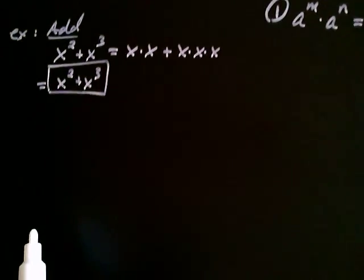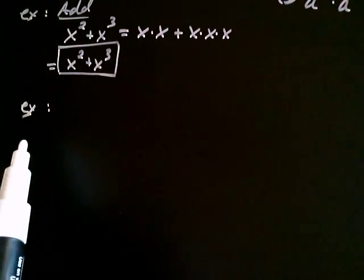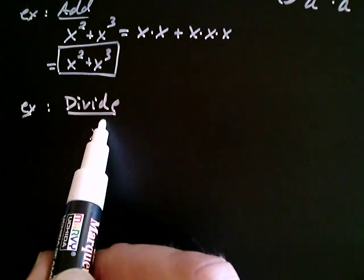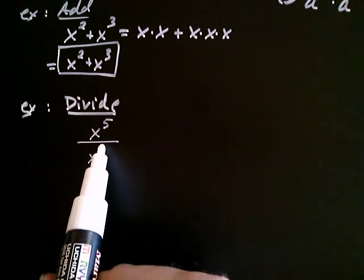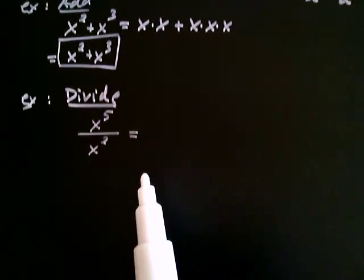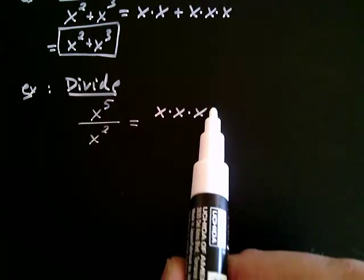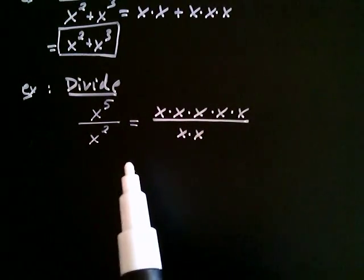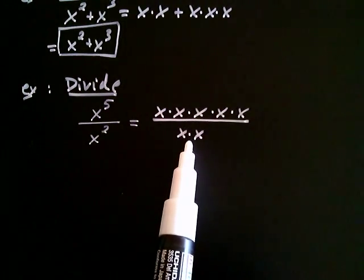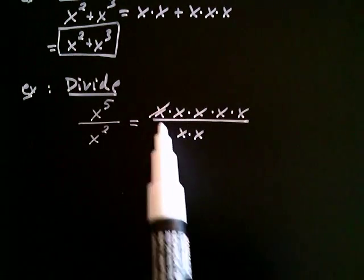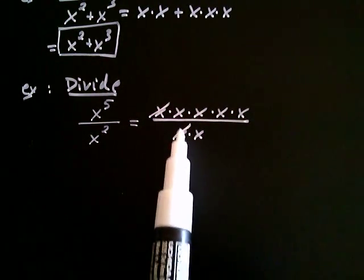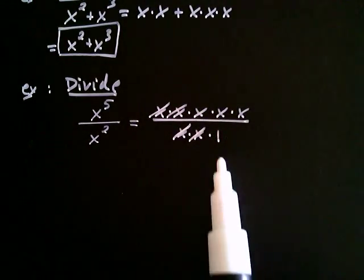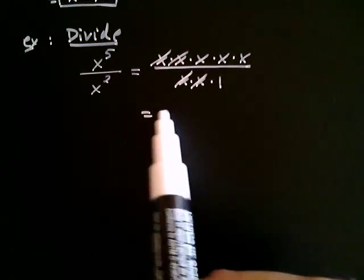Let's see another property through another example. Let's say you were asked to divide — x to the fifth divided by x to the second. If you write this out, x to the fifth is x times x times x times x times x, and x to the second is x times x. You can cancel factors when you have multiplication. Cancel one factor of x in the numerator with one in the denominator, and cancel once more. You're left with a one in the denominator and x times x times x in the numerator, which is x to the third.